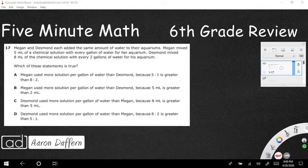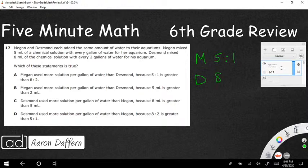So let's get started. This has got a lot of text, but if we break this down, we are going to notice that it's not really a whole lot that we need to deal with. It says Megan and Desmond each added the same amount of water to their aquariums. Megan mixed 5 milliliters of chemical solution with every gallon of water. I'm going to put this right here - Megan, and her solution was 5 milliliters to every gallon. So I'm going to call it 5 to 1.